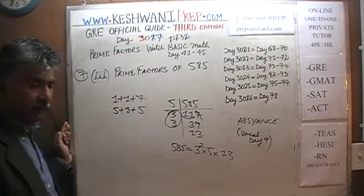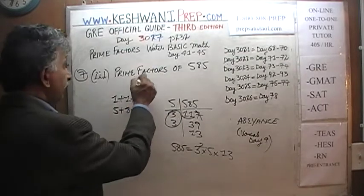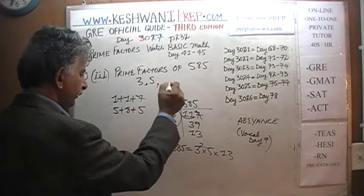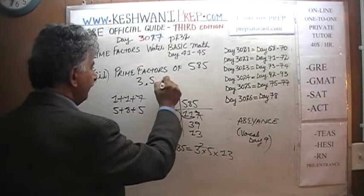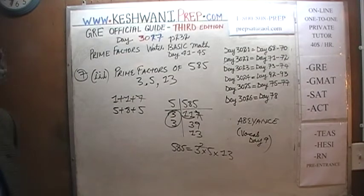Therefore, the prime factors of 585 are 3, 5, and 13.